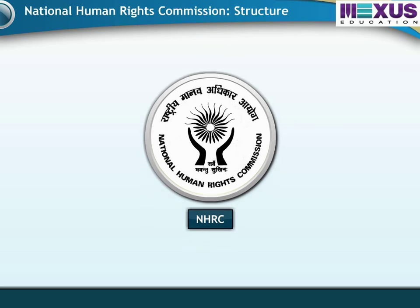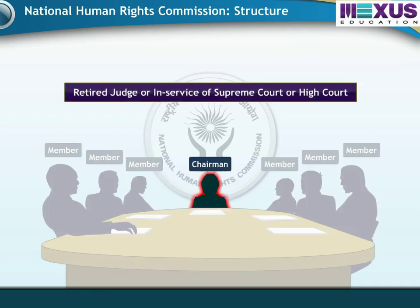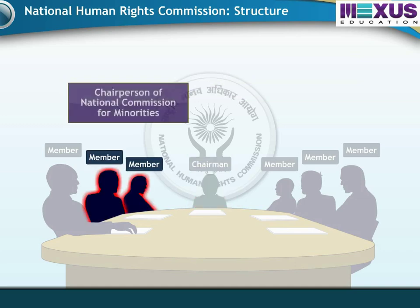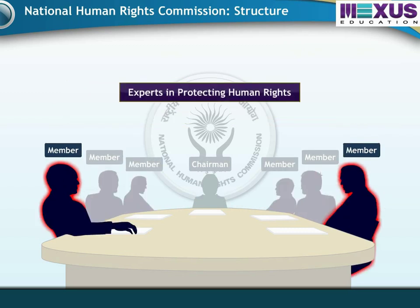The NHRC includes six members and a chairman. A retired judge or in-service judge of the Supreme Court or High Court is appointed as the chairperson of the commission. The chairpersons of the National Commission for Minorities and the National Commission for Women are also members. Two experts who have worked in the field of protecting human rights are also included as members.